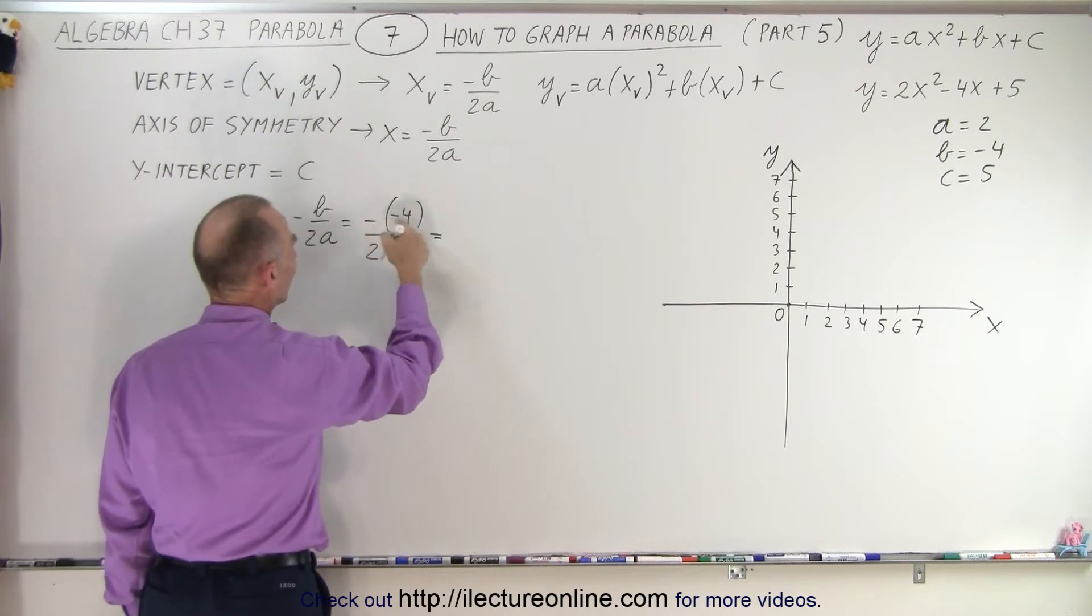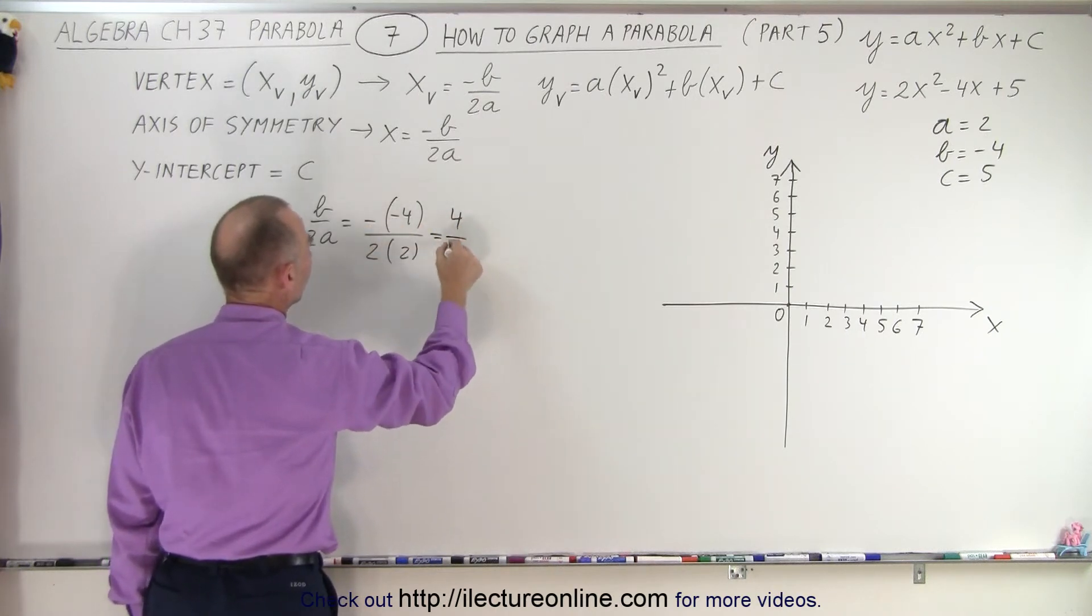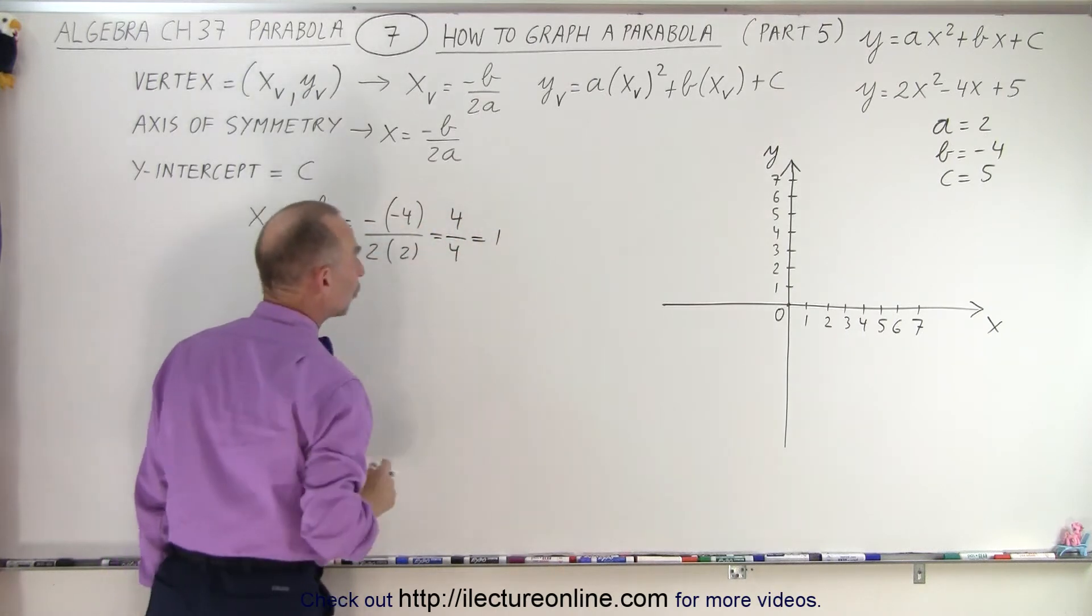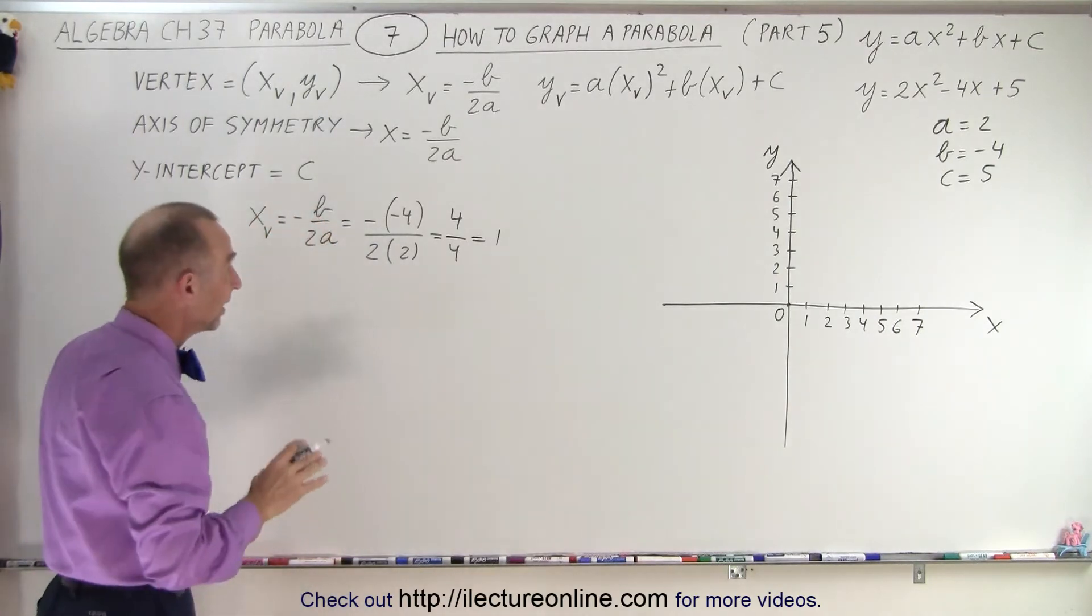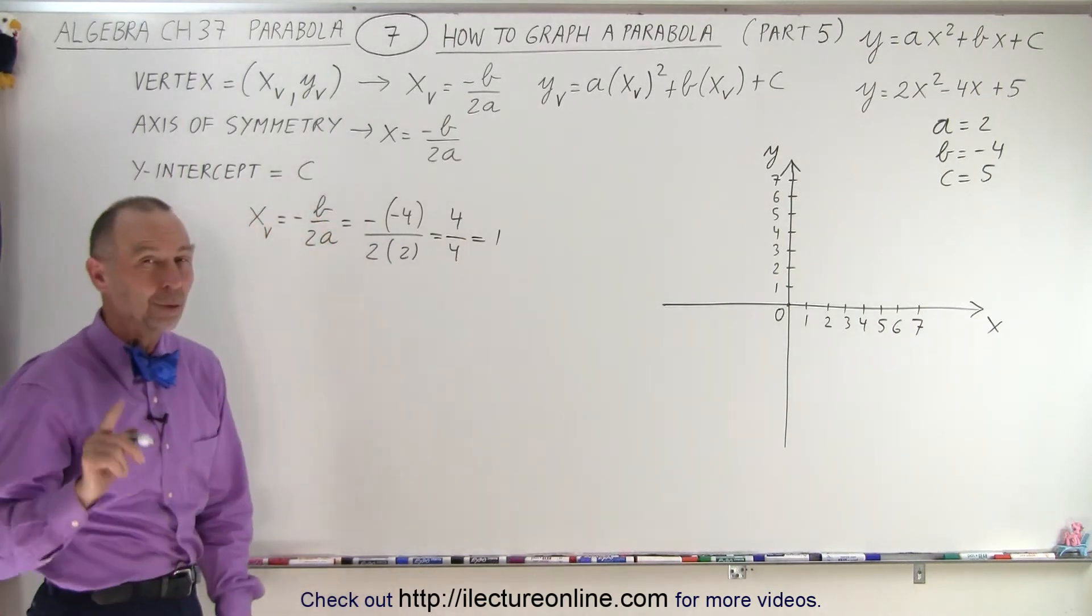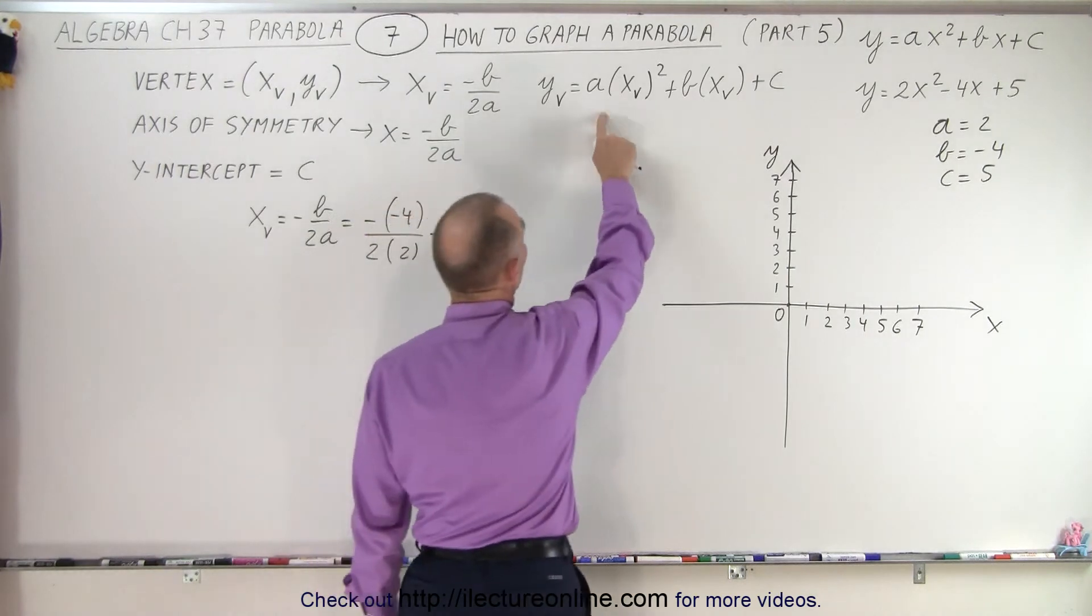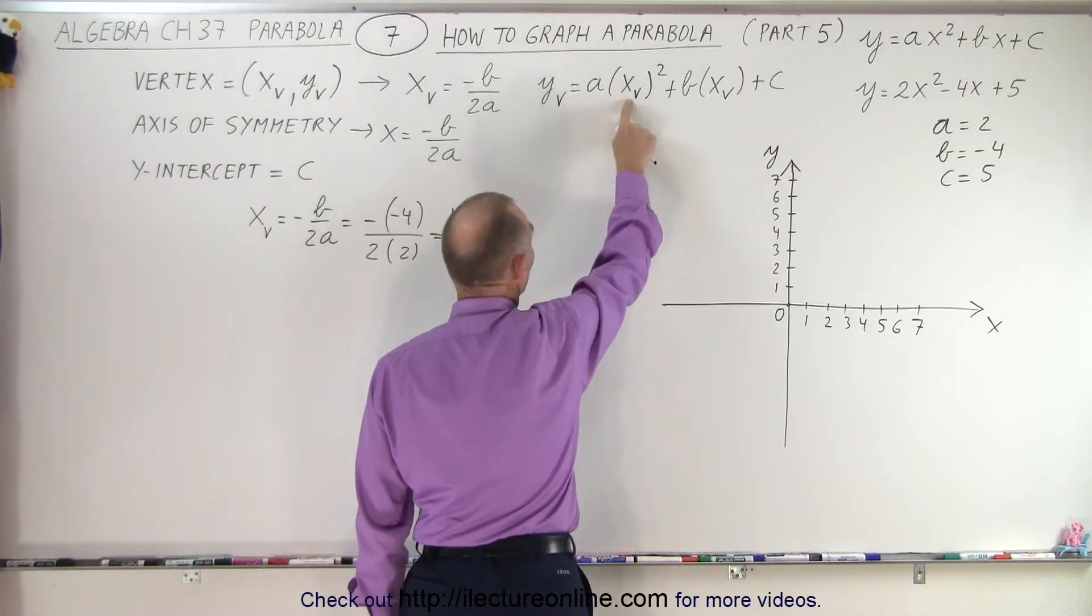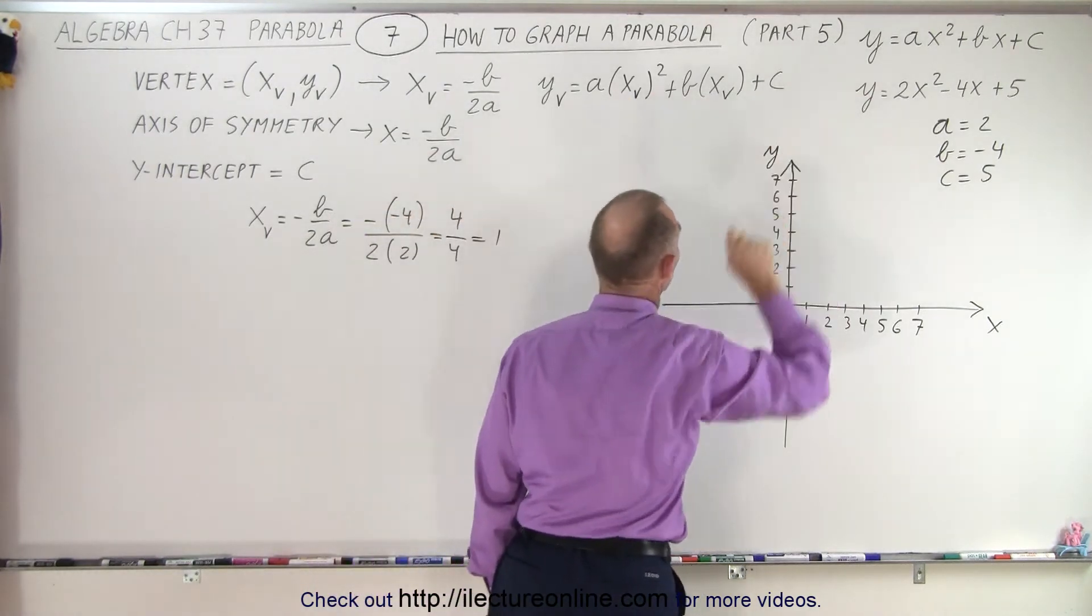So this becomes minus times a minus, which is plus 4 over 4, which is 1. So the x-coordinate of the vertex is equal to 1. Now we need to find the y-coordinate, and to find that, we're going to plug in the x-coordinate of the vertex into our general equation.